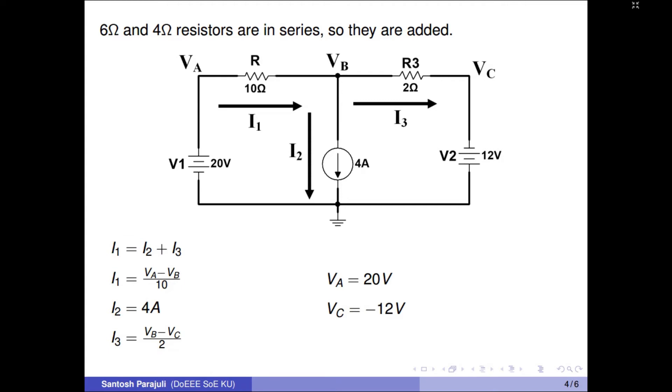Note that VA is equal to plus 20 volts, but node C is at minus 12 volts potential.